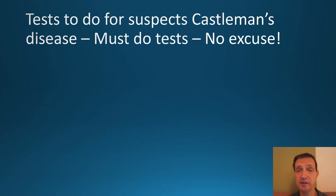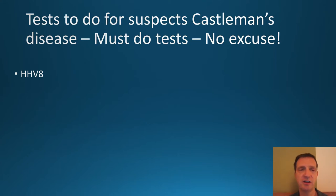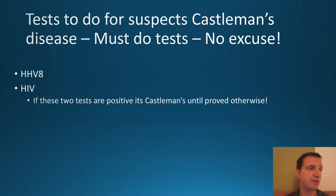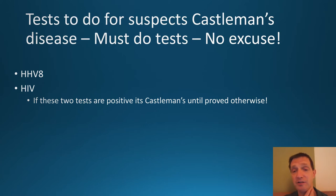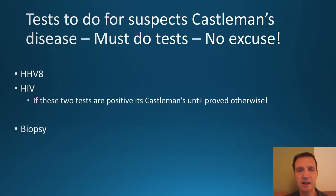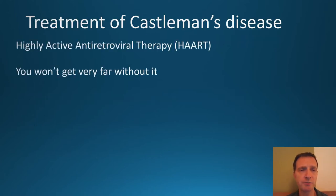In terms of testing, if someone is suspected of having Castleman's disease you must test for HHV8, the human herpes virus 8 considered to cause multicentric Castleman's disease. You also must test for HIV, even if the person is elderly or has a lifestyle where HIV would not be suspected. If someone is HIV positive with HHV8 and has enlarged lymph nodes, it is Castleman's disease until proven otherwise. To confirm the diagnosis, the next step is a biopsy, which will guide management.